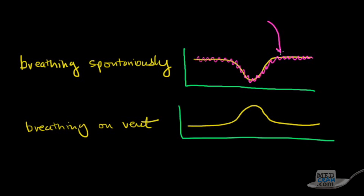The key point is to always measure at the end of exhalation — this is the true point of measurement. The same principle applies when breathing on a ventilator, except the ventilator pushes air into the chest, so the intrathoracic pressure goes up rather than down on inhalation. You should still always check central venous pressure at end exhalation. When measuring spontaneous breathing, that point is at the top of the cycle; on a ventilator, it's at the bottom — but both are end exhalation.